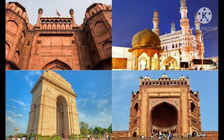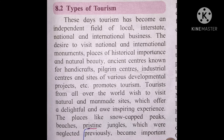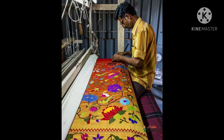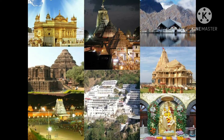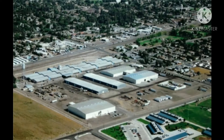People like to visit such monuments and other places of historical importance, natural beauty, and ancient centers known for handicraft — for example, Paithan village in Aurangabad and Kanchipuram in Tamil Nadu. People also like to visit pilgrim places, meaning holy places, industrial centers, and various development projects.